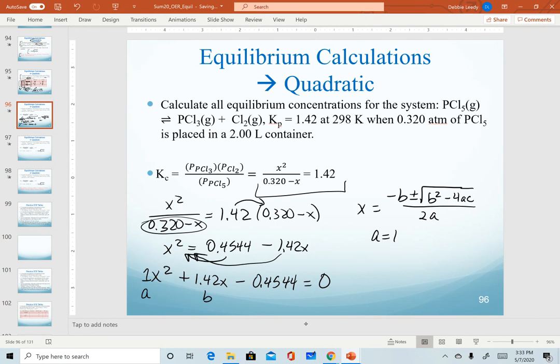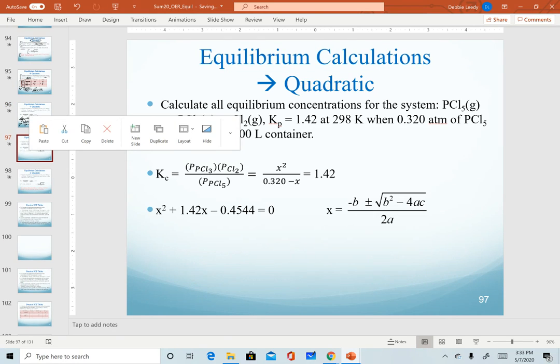b is the coefficient in front of my next term. That will be 1.42. And c is the quantity in front of my last term paying attention to sign. So c is actually going to be a negative 0.4544. And so when we plug all of that into our quadratic equation, it turns out we actually get two solutions.